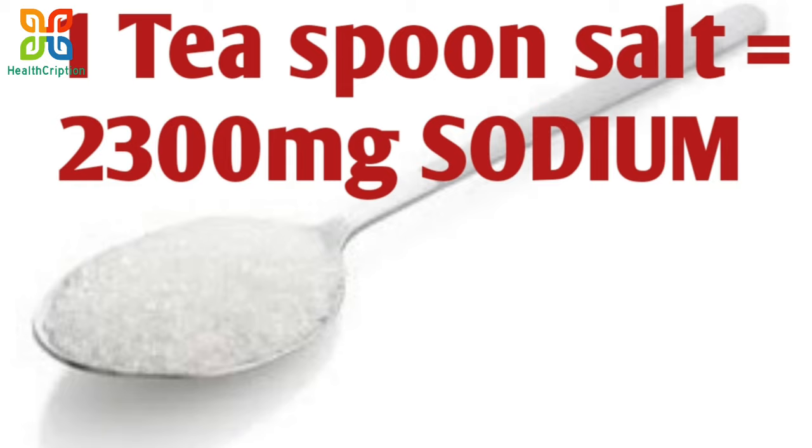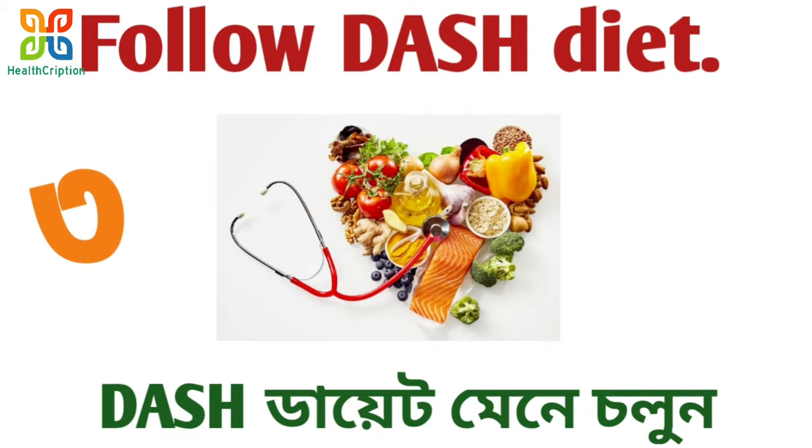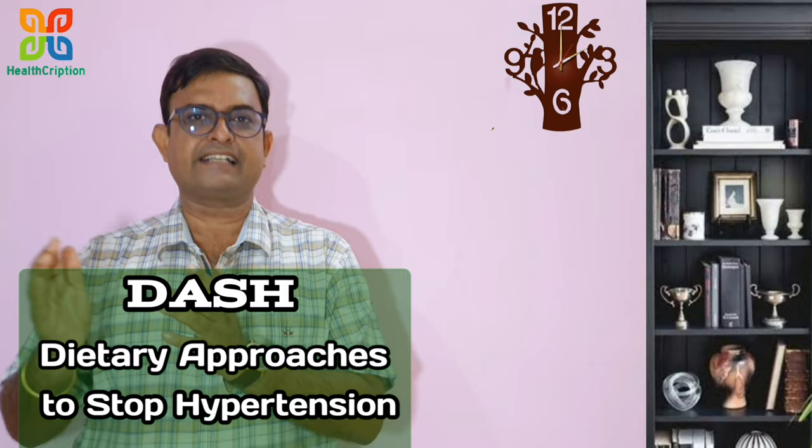The WHO recommends not more than 2,000 mg of sodium per day. We eat with a lot of food, and we should maintain the DASH diet. DASH stands for Dietary Approach to Stop Hypertension. This DASH diet recommends reducing saturated fats, junk food, fast food, packaged food, and refined carbohydrates like maida and polished rice.